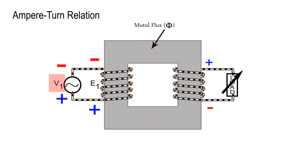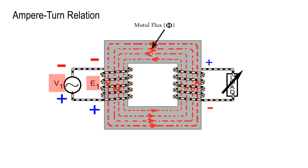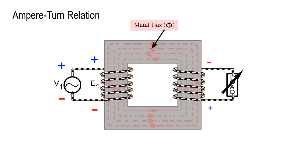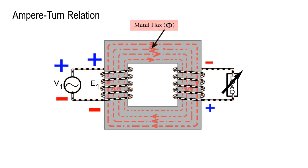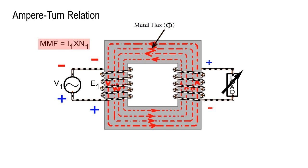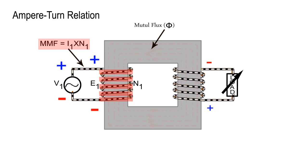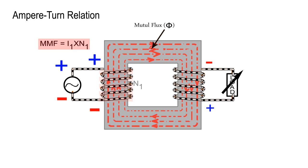Hence, since V1 is constant, the induced EMF E1 must also be nearly constant. The mutual flux phi also must be nearly constant at all normal loads, and therefore the MMF (current multiplied by number of turns) producing it must be nearly constant.